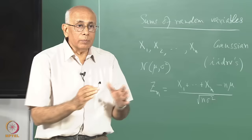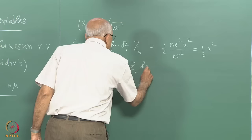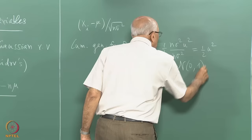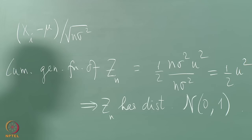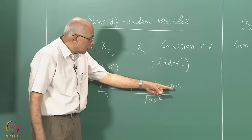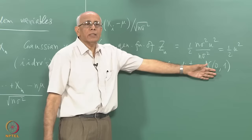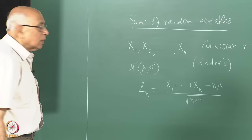We have a statement that the cumulant generating function of this sum — after removing the mean and dividing by sqrt(n sigma squared) — is just one-half u squared. This immediately implies that z_n has a normal distribution with zero mean and unit variance, the standard Gaussian N(0,1). This is true for every n.